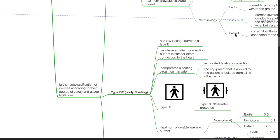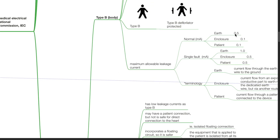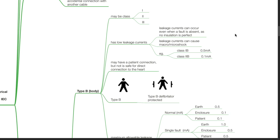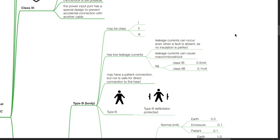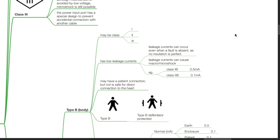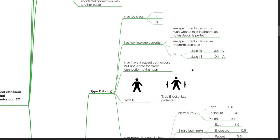Further subclassification of devices according to their degree of safety and usage limitations. Type B may be class 1, 2, or 3. These equipments have low leakage currents. Leakage currents can occur even when a fault is absent, as no insulation is perfect. Leakage currents can cause macro or microshock.